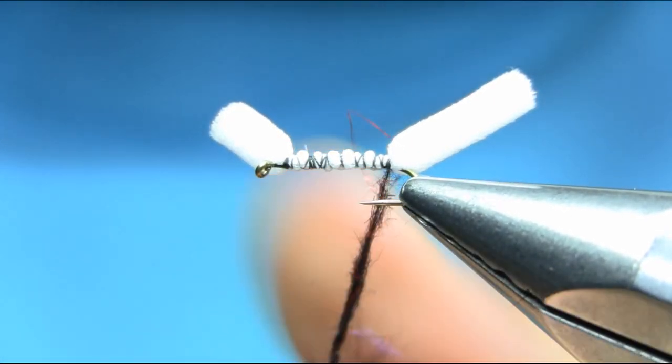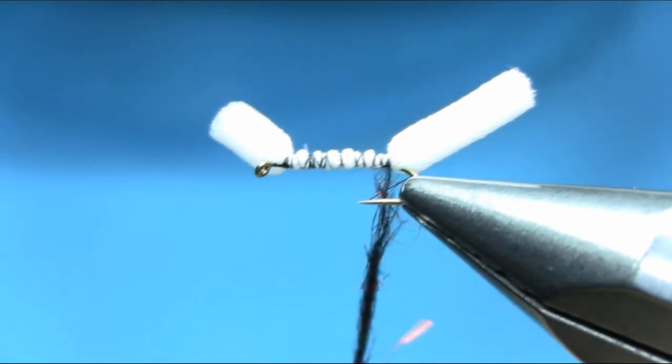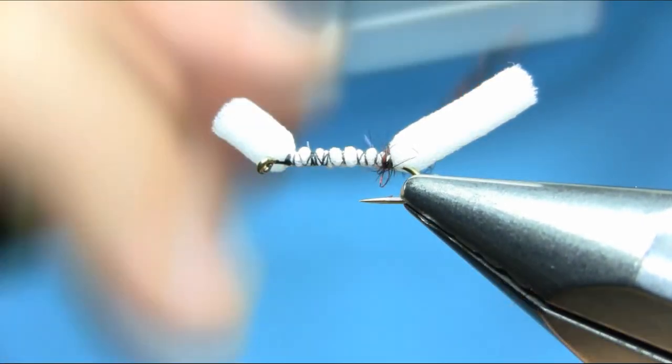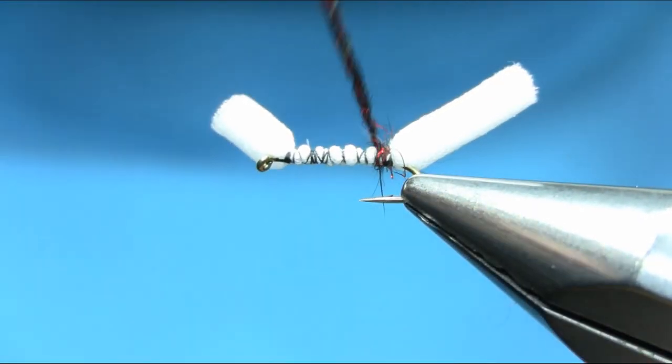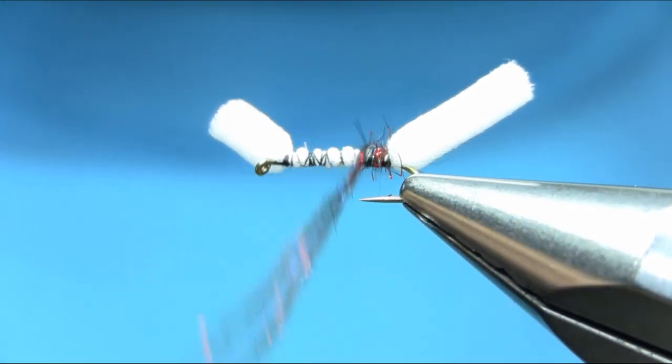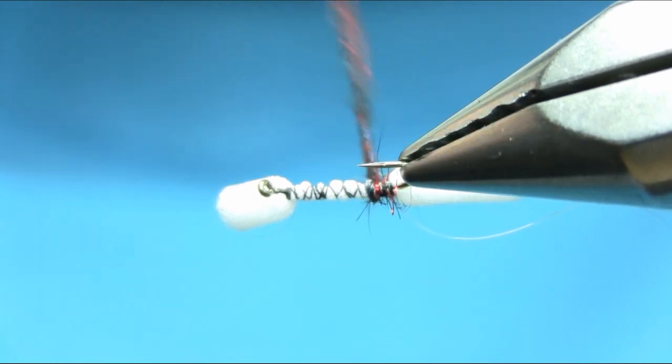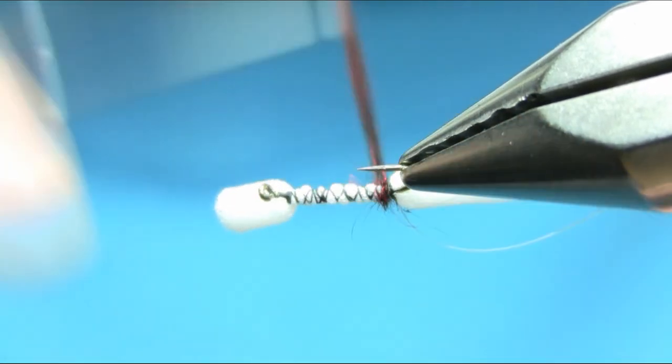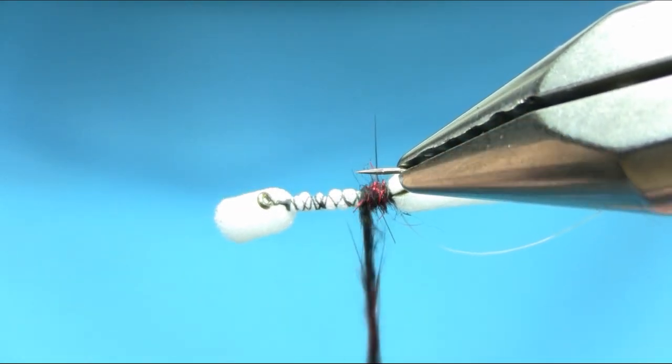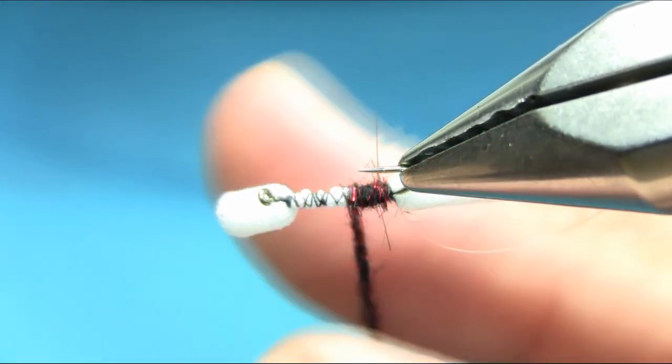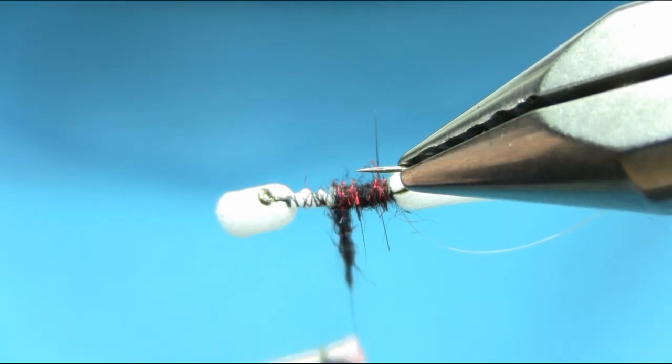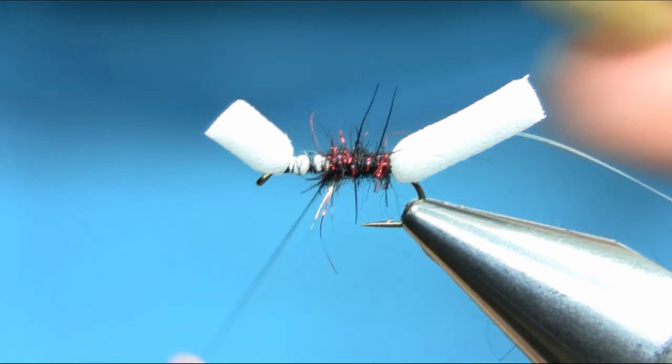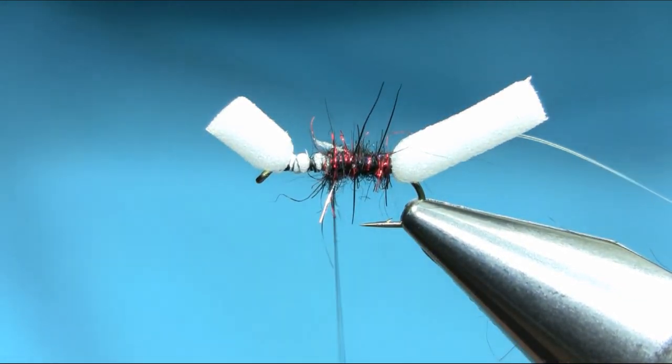Bring it around and give a little turn at the same time. Make sure you're hiding all this white. Take your time. Keep going. Add some more wax on it and a little bit more dubbing.